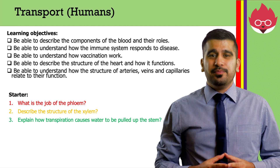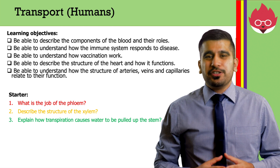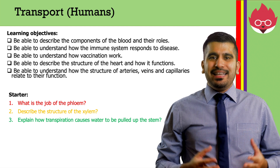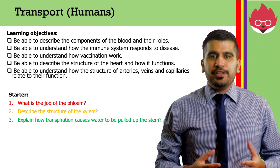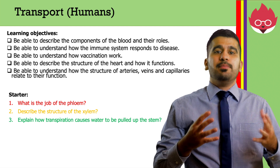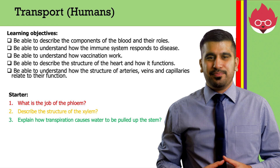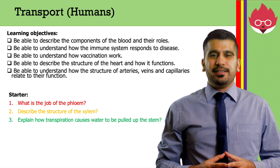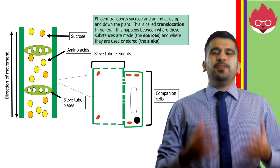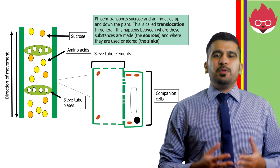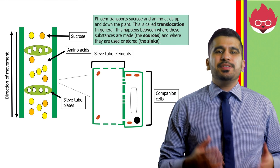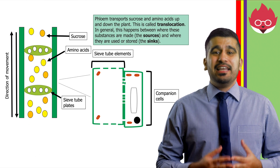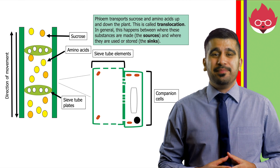As a starter: what is the job of the phloem? Describe the structure of the xylem. Explain how transpiration causes water to be pulled up the stem. For question 1, the phloem transports sucrose and amino acids up and down the plant in a process called translocation.